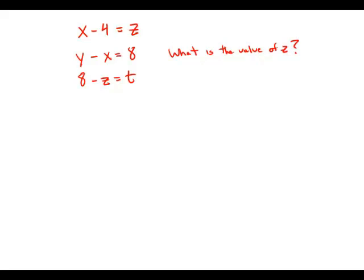Were the system of equations given, what is the value of z? So first of all, notice that we have three equations and four unknowns.